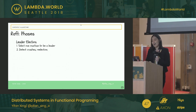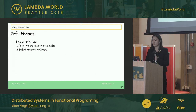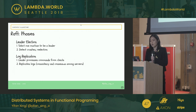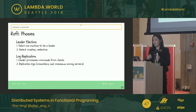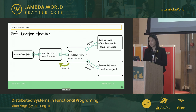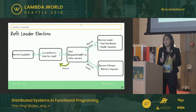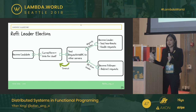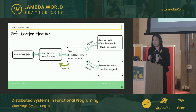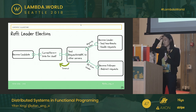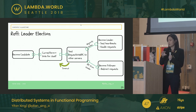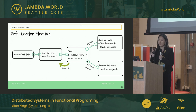Raft has two different phases. The first phase is leader election — we select one machine to be the leader and detect when the leader crashes to redo the election. We also have log replication, where now that we have a leader, we replicate logs from the leader. Let's take a look at how leader election works. Different machines all get a random different timeout. Once a machine times out, it becomes a candidate, starts the election, increments its own term, and votes for itself. It then sends a request vote RPC to other servers to collect votes.